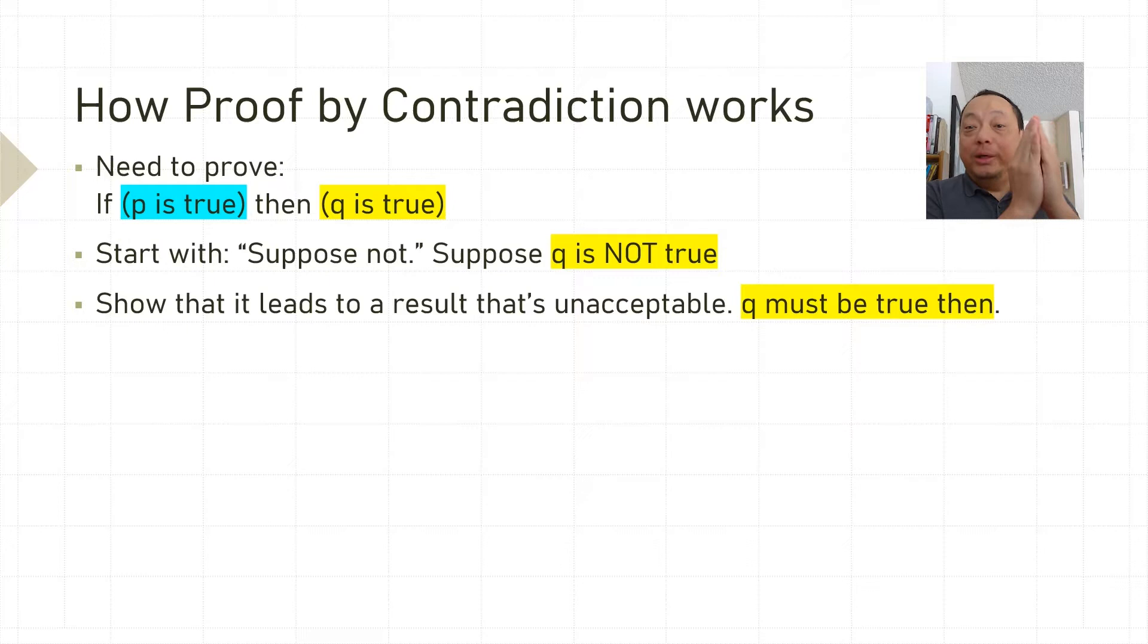to show that it leads to a result that's unacceptable. Since the result is unacceptable, the supposed not part must have been wrong and therefore Q must be true.